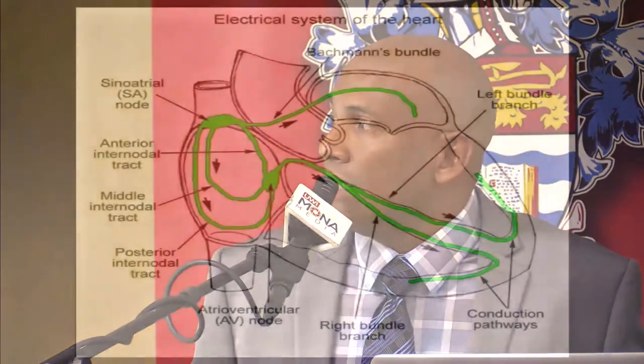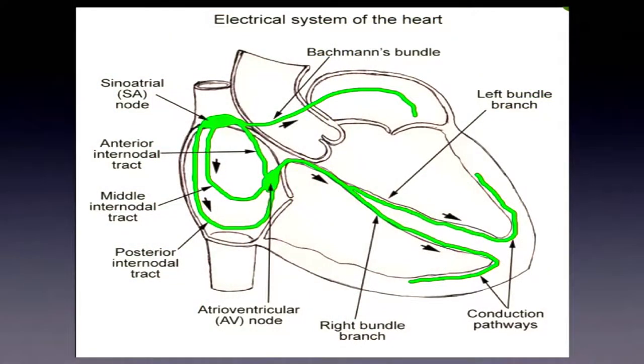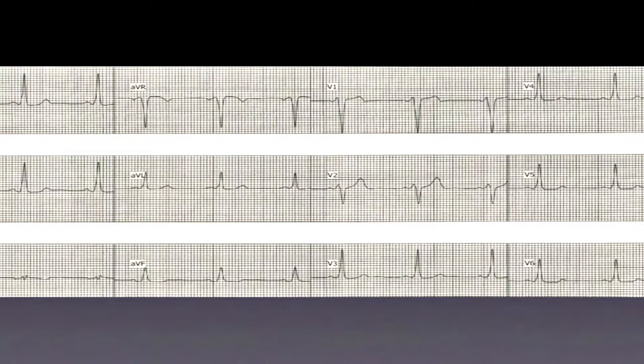As a reminder, this is the conduction system of the heart. We are all born with our own natural pacemaker called the sinoatrial node. From there, impulses travel to the AV node via the anterior, middle, and posterior internodal tracts. They also move from right atrium to left atrium through Bachmann's bundle, as well as some connection through the coronary sinus. When it gets down to the AV node, it goes down the His bundle and then disperses into left and right.